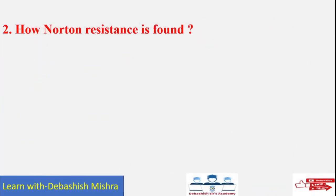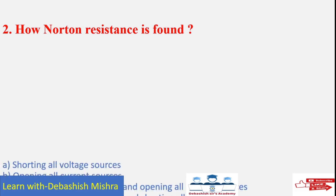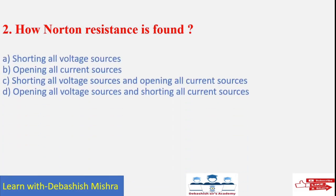Second question: How is Norton resistance found? The options are: shorting all voltage sources; opening all current sources; shorting all voltage sources and opening all current sources; or opening all voltage sources and shorting all current sources.